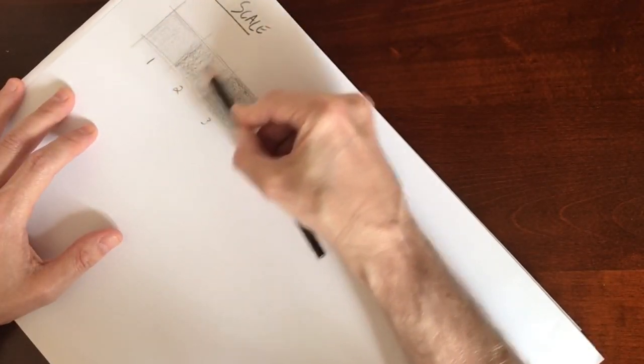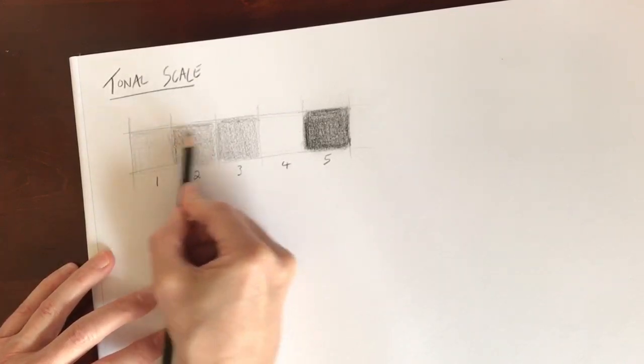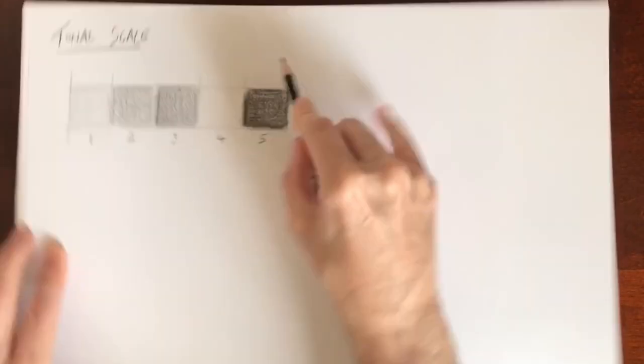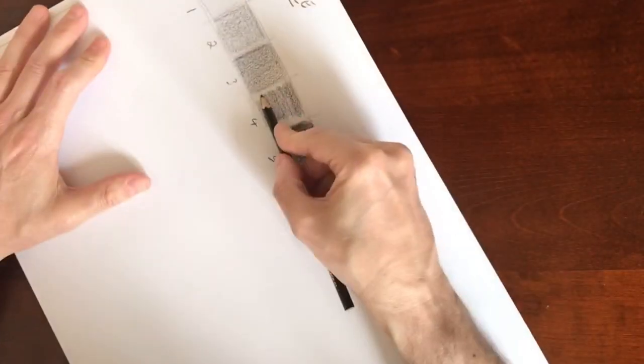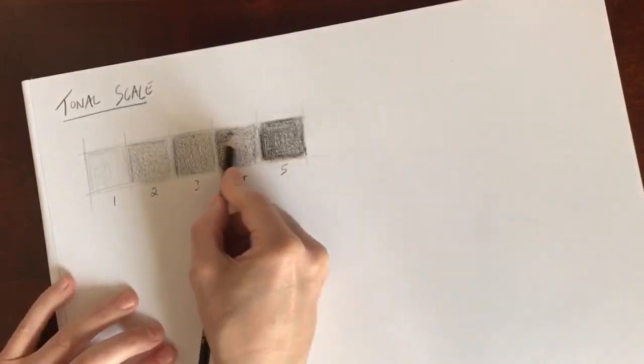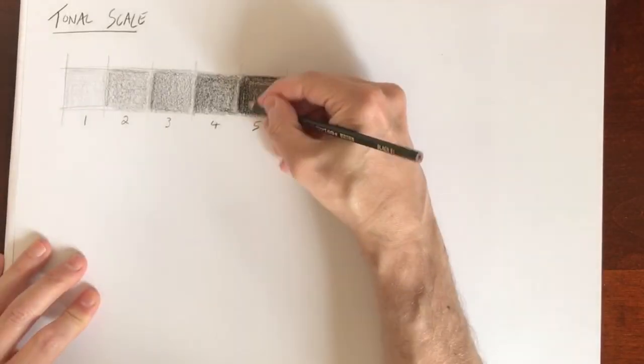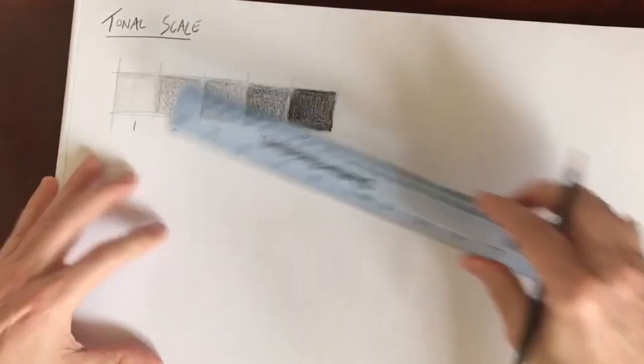And then we would go ahead and do 2, trying to get its tone in between 1 and 3. You might find you have to make adjustments so that you get a clear progression from 1 to 5.